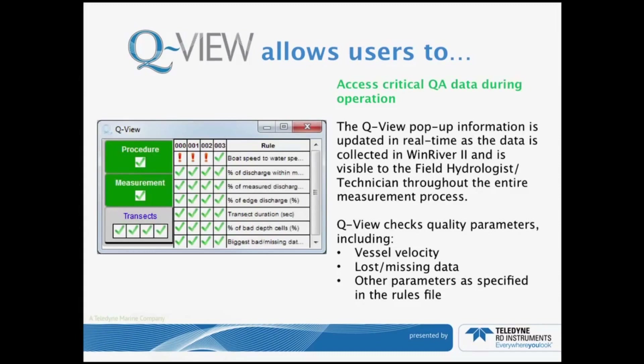QView also provides access to the critical QA data during operation — this is during the measurement portion. We're going to check vessel velocity, as it's imperative that the ADCP is not moving too fast through the water. QView has a parameter for maximum vessel velocity, how much lost or missing data has exceeded established thresholds, and many other parameters specified in the rules file being checked during each individual measurement.